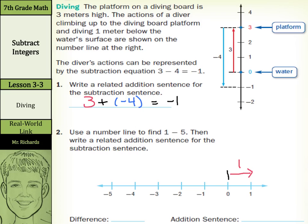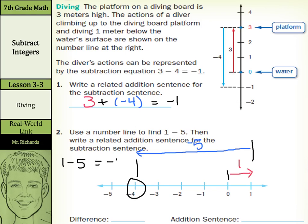Then, if we're trying to subtract a positive five, we're going to work our way backwards: one, two, three, four, five. And that leaves me here with negative four. So one minus five equals negative four.